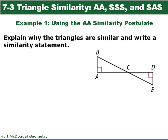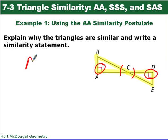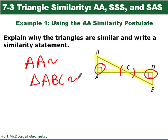In this example, we want to explain why the triangles are similar and write a similarity statement. Our two triangles are triangle BAC and triangle EDC. We have vertical angles, so those angles are congruent, and we also have two right angles. So we have two angles — angle-angle similarity. The similarity statement: triangle ABC is similar to triangle DEC.